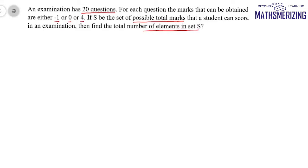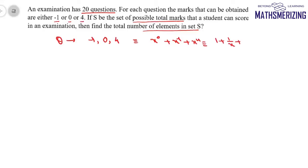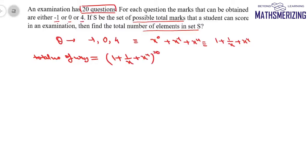One way of solving this: for each question there are three possibilities — a student will score minus 1, 0, or 4. We can express this by the polynomial where scoring 0 is represented by x to the power 0, scoring minus 1 by 1/x, and scoring 4 by x to the power 4. So for 20 questions, we raise this to the power 20: (1 + 1/x + x⁴)²⁰.